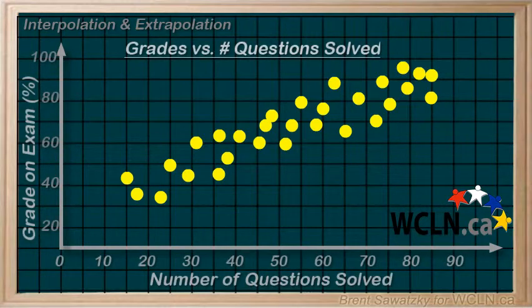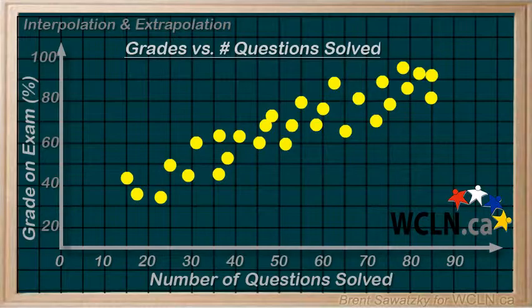Once we have a best-fit line, we're prepared to make some predictions. For example, here's a little study that a teacher did with some students. During the studying for a midterm, the teacher asked the students to each keep track of the number of questions that they solved on their own during their studying.